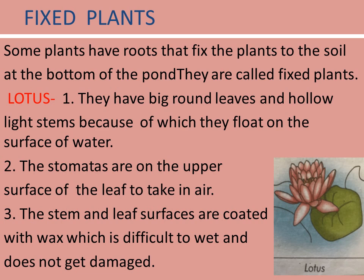Fixed plants: some plants have roots that fix the plant to the soil at the bottom of the pond. They are called fixed plants. Lotus: they have big round leaves and hollow, light stems, because of which they float on the surface of water. The stomata are on the upper surface of the leaf to take in air.